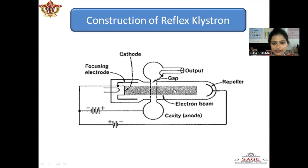Under suitable conditions, the electrons give more energy to the gap than they took from the gap on their forward journey and oscillations are sustained over this drift space.